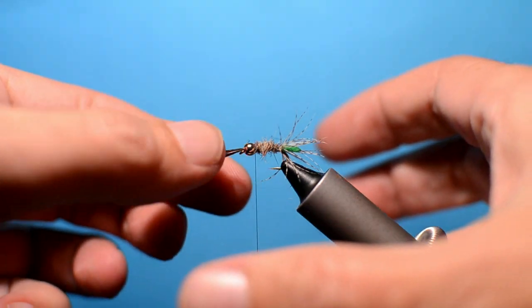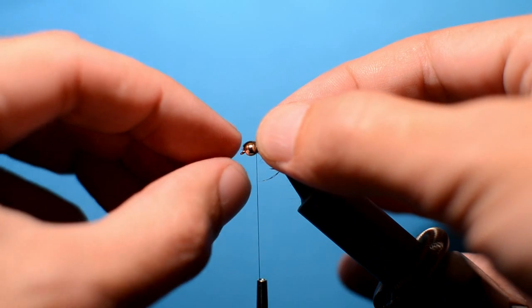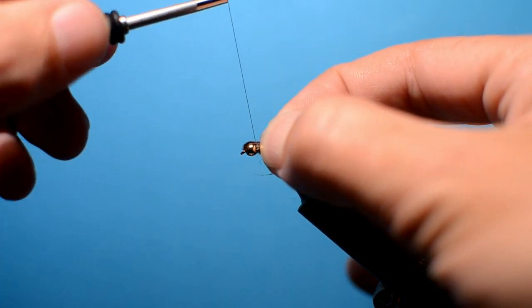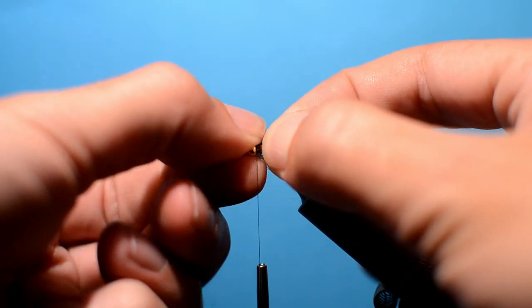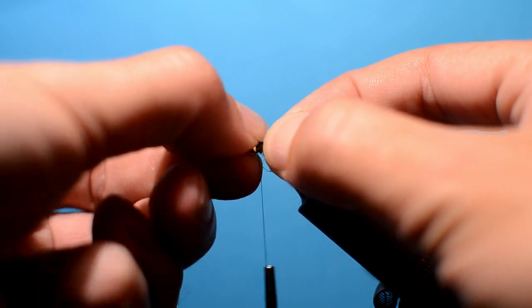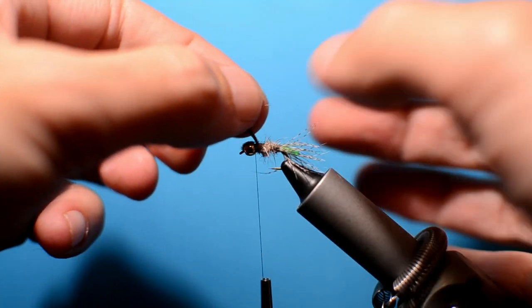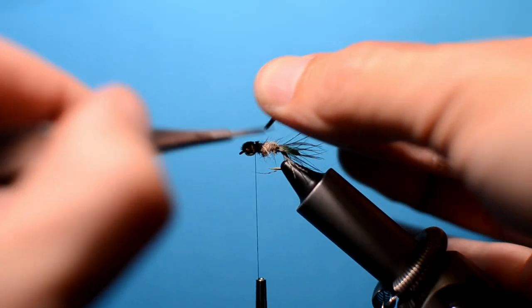Now at the top, what we want to do is grab these pheasant tails and bring them over the top of the bead. Keep them fairly tight. Take a couple of thread loops around. Use your finger or thumb and just push them right in. Pull them up and just trim them off.